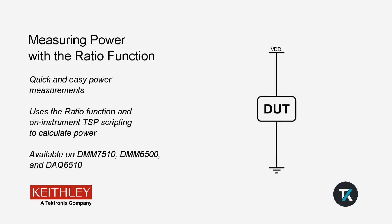To measure power being dissipated by a device, we need to know two things: the voltage drop across it and the current flowing through it.